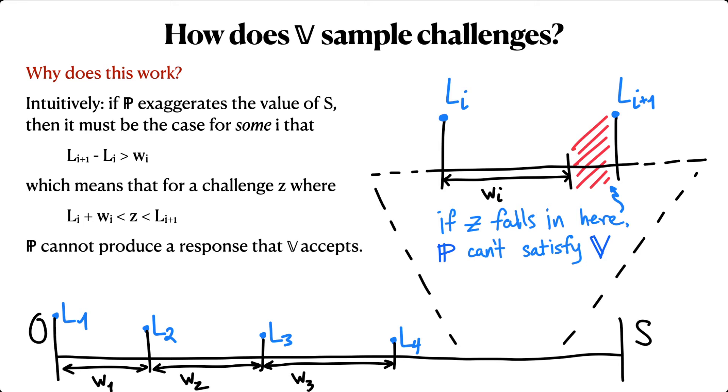This means that if the verifier sends a challenge Z that is greater than L sub i plus W sub i and less than L sub i plus one, there's simply no leaf in the signature tree that would cause the verifier to accept.